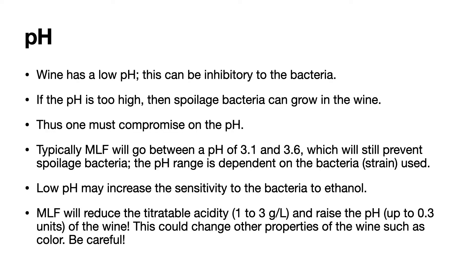Wine has a low pH, and pH can be inhibitory to the bacteria. If the pH is too high, spoilage bacteria can grow in the wine, which is undesirable. We want to keep the acidity sufficient to inhibit other bacteria that might contribute to volatile acidity or even turn our wine into vinegar. One must compromise on the pH. Typically, MLF will proceed between a pH of 3.1 and 3.6, which will still prevent spoilage bacteria. The pH range is dependent on the bacteria used, and a low pH may increase the sensitivity of the bacteria to ethanol. MLF will reduce your titratable acidity by as much as 1 to 3 grams per liter of wine and raise the pH by up to 0.3 units.